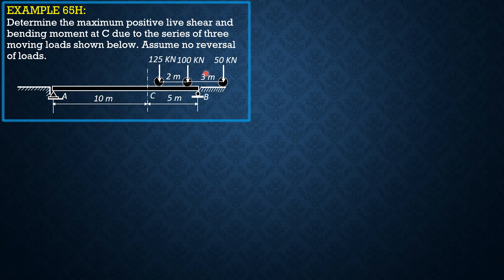The movement is from right to left and no reversal of load. For change in shear, remember the general criterion: delta V equals W·h over L minus P1, plus P1·h over L, plus P·d over L if there is an incoming load. We use P1·h over L, not minus P1·b over L, because the distance between the loads is very small compared to the span, so h will be less than 10 for all cases.